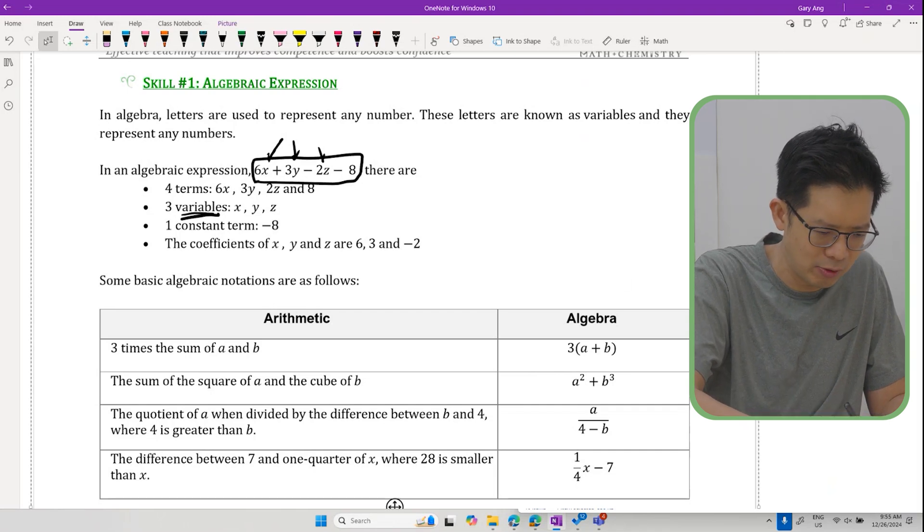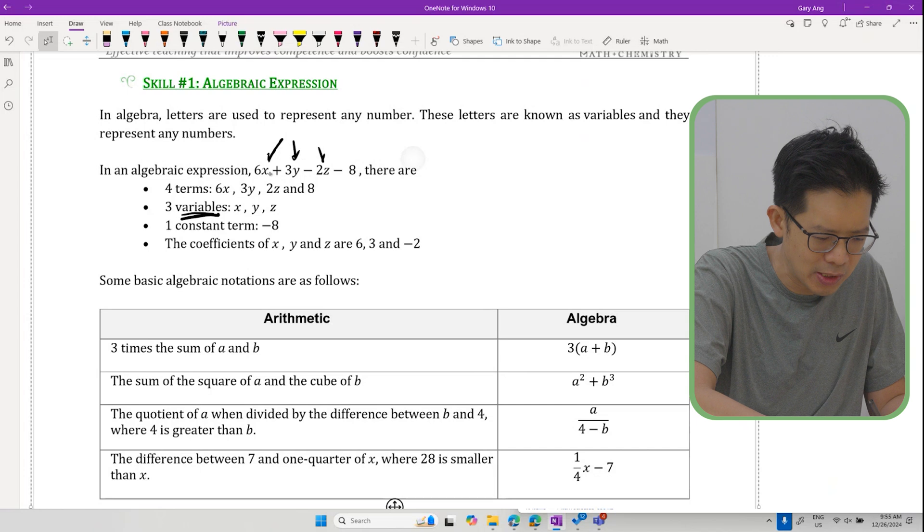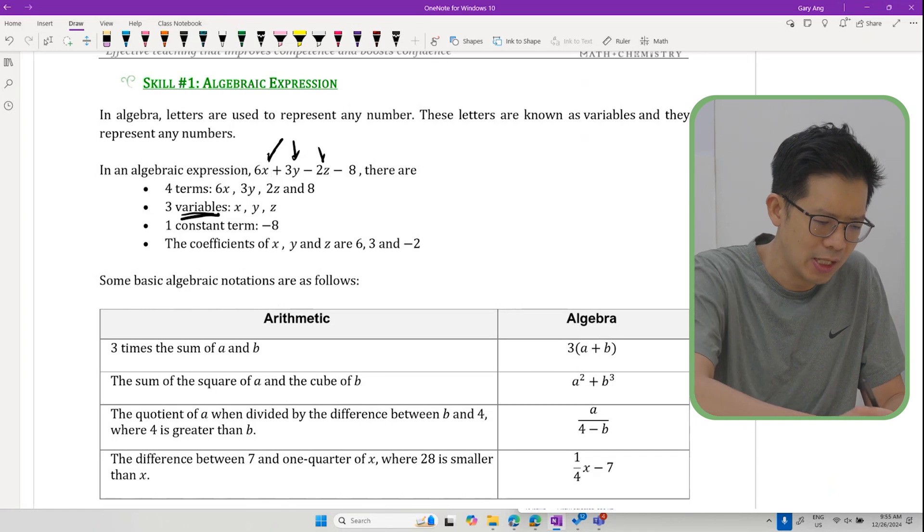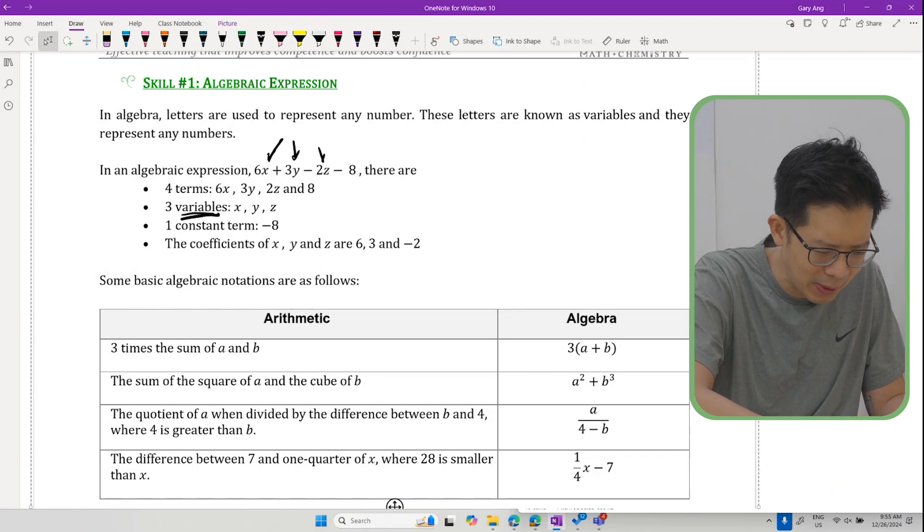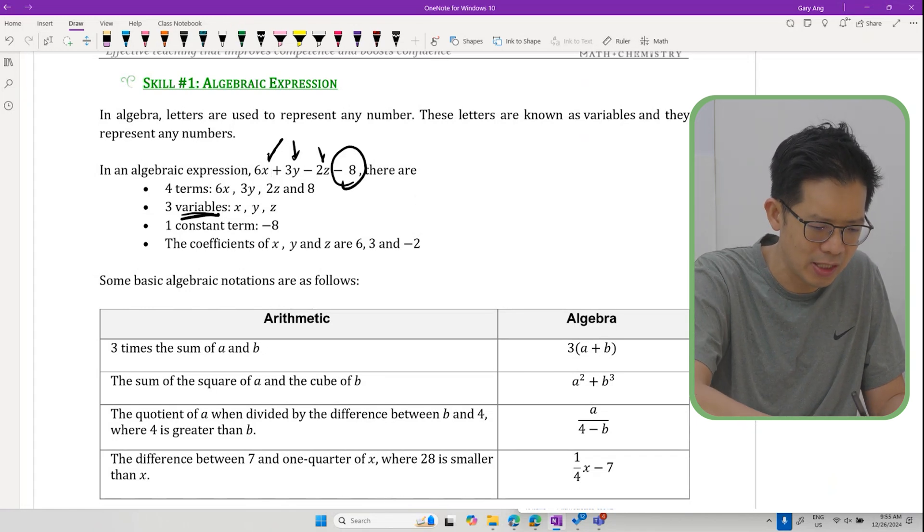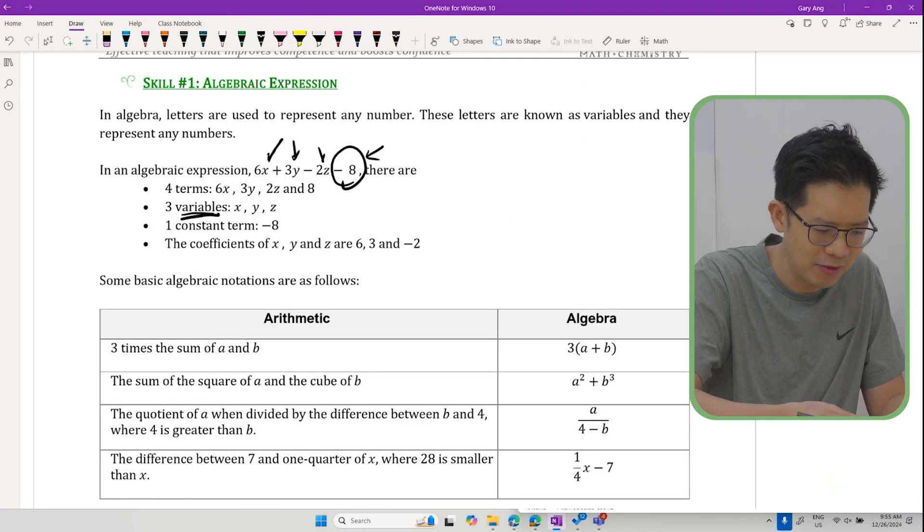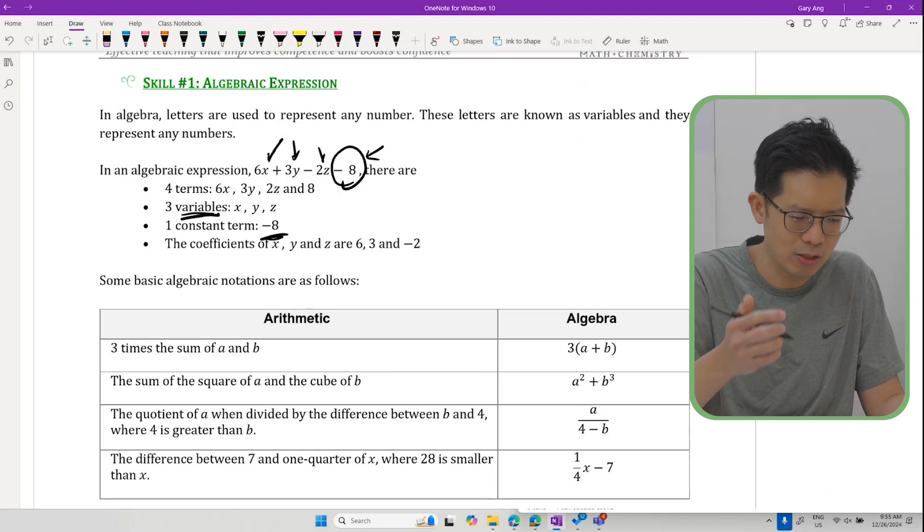This is a pretty long expression with many components. These components, part by part, are what we call terms in an algebraic expression. There's a particular term that's quite special - it doesn't come with any algebraic letters. The negative 8 is what we call a constant term because it doesn't change, it's constant, it's fixed.